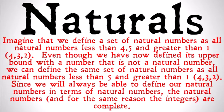Consider natural numbers. Imagine we define a subset of the natural numbers as all natural numbers that are less than 4.5 and greater than 1. That's going to be the set of 4, 3, and 2, assuming we're talking about exclusives. So even though we've defined its upper bound with a number that is not a natural number — 4.5 is not a natural number, it's a decimal, and it's not within our set.